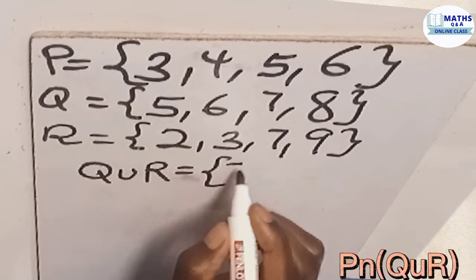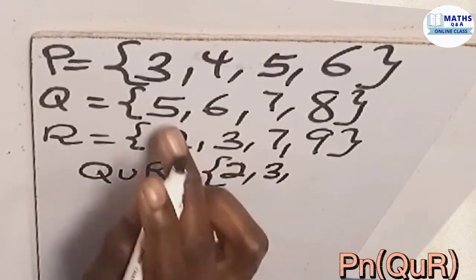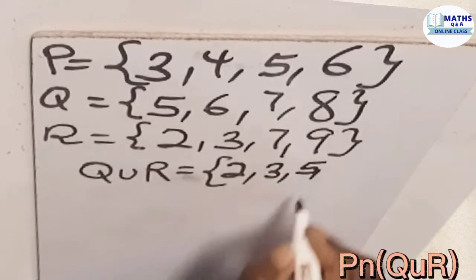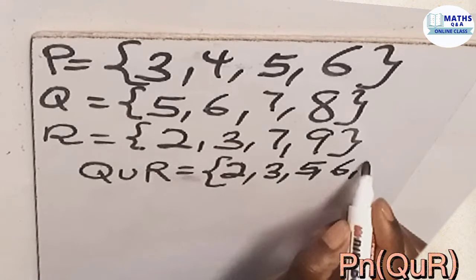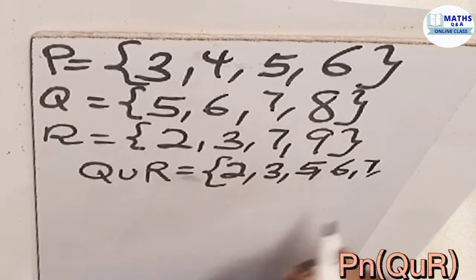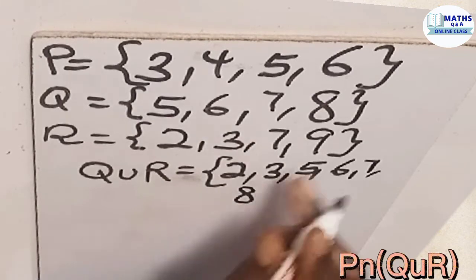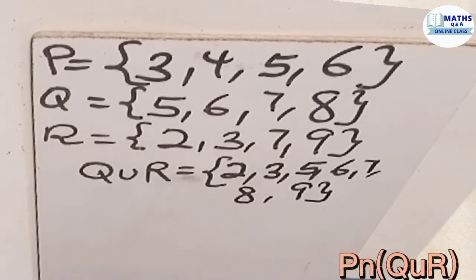So now let's write Q union R members. We have 2, we have 3, the next one is 5, the next one is 6. We also have 7. You see, we have 7 here, we have 7 here but we write only one. And then we have 8, we also have 9.